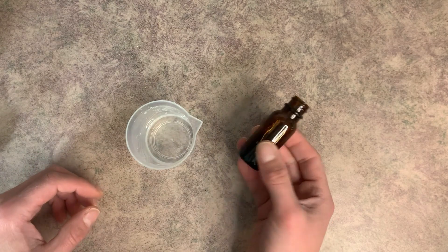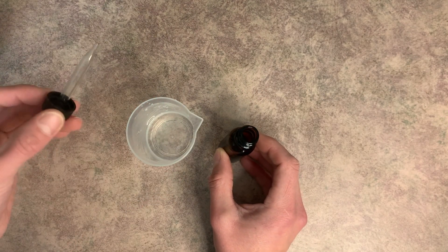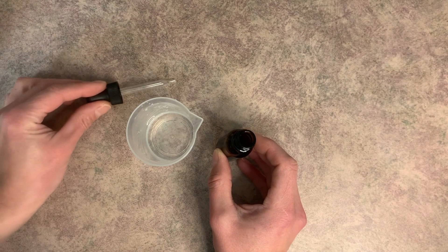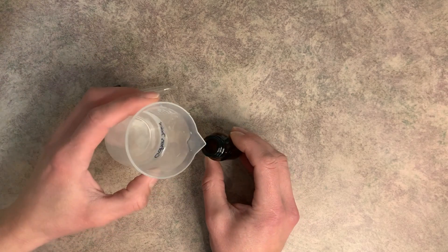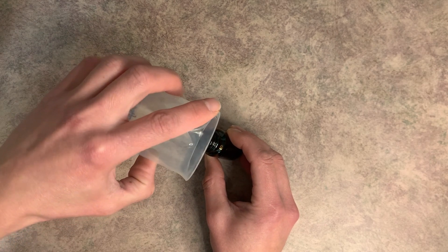So now what we'll do is we'll grab our container. You want one that's a dark color and you preferably want one with a little dropper top because you're not going to use very much of the solution. And what we're going to do is just pour the solution right into our bottle.